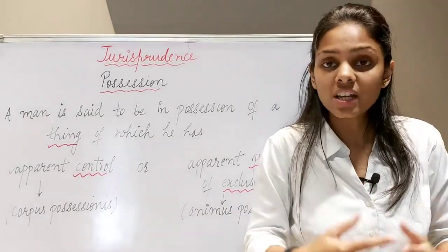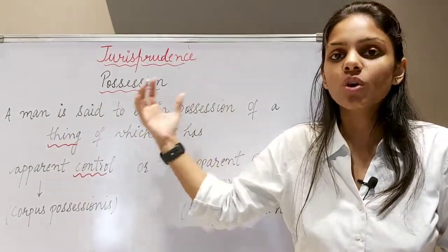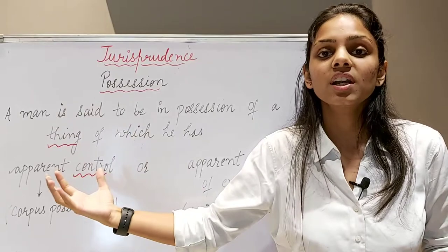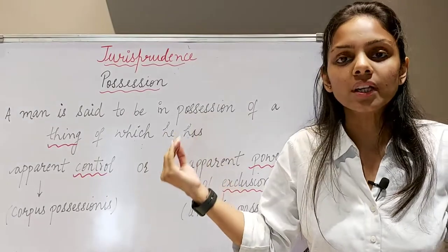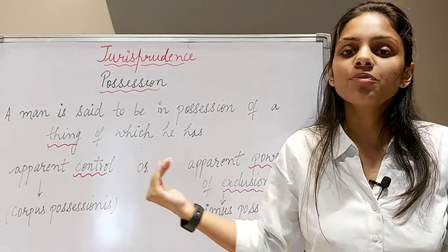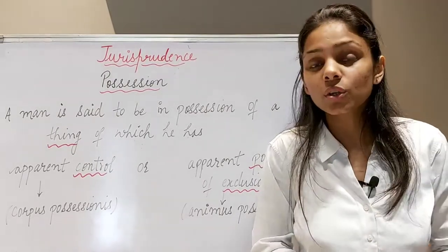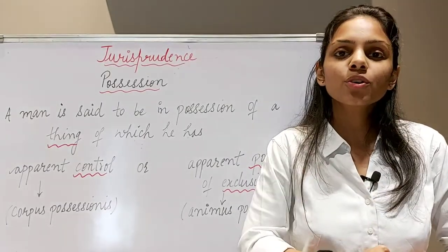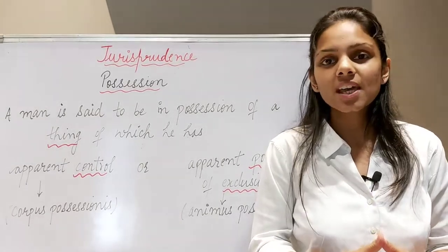Yahi kuch basic si intro thi, ya definition thi hamari possession ki guys. Yahan par humne dekha ki koi bhi ek insaan is said to be in possession of a thing, which may be movable aur immovable, jis cheez par uska apparent control hai — yeh cheez uska physical element dikhati hai — ya phir is cheez par uska apparent power of exclusion hai, this shows your intent, your will or your volition ki aap us cheez ko exclusively use karte hain. Yahi do aapke different types of possessions mein hain, clubbed with possession in fact and possession in law. I hope guys things are quite clear to you — still if you have any doubts pertaining to the legal definition of possession, please feel free to comment in the comment box, I'll be replying to all the doubts and queries. Till then guys keep learning, keep shining, stay safe and bye-bye.